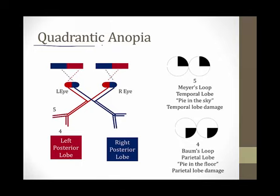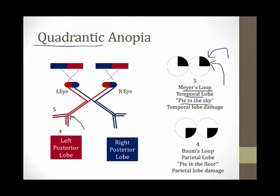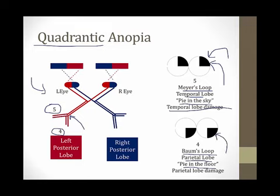Our last visual field defect is called quadrantic anopia. This occurs when one quadrant of both visual fields is lost, resulting from damage to one of the projections — either Myers' loop or Baum's loop — from the lateral geniculate nucleus to the posterior lobe of the brain. Myers' loop is found in the temporal lobe, and when there's damage to Myers' loop, this results in the pie-in-the-sky version of quadrantic anopia, where the upper right-sided or left-sided quadrant is lost — this occurs with temporal lobe damage. Baum's loop is point number four in the parietal lobe, and damage to Baum's loop results in the pie-in-the-floor type of quadrantic anopia, which can be seen in the setting of parietal lobe damage. And that concludes our module on visual fields.